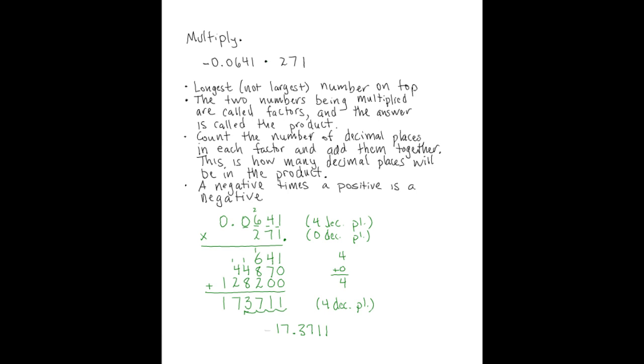I say almost final answer because, remember, this problem was -0.0641 times 271. We didn't deal with the negative anywhere in our multiplication problem, because we knew that we could multiply the two numbers as if they were positive, and then simply tack the negative on at the end. So our final answer is -17.3711. Let's try another problem.